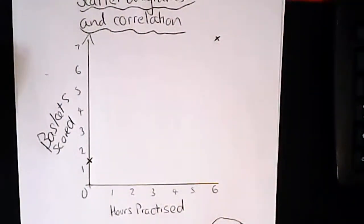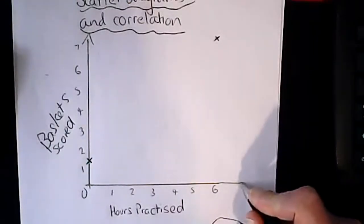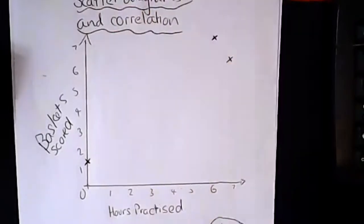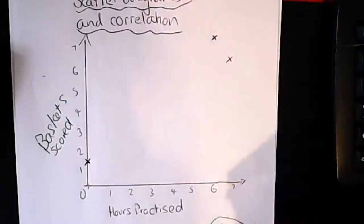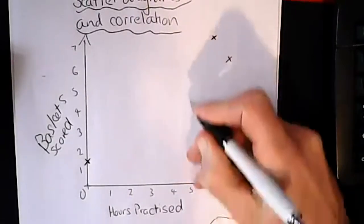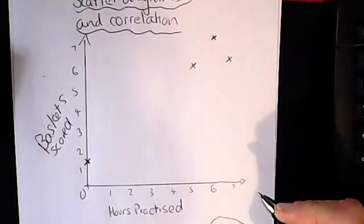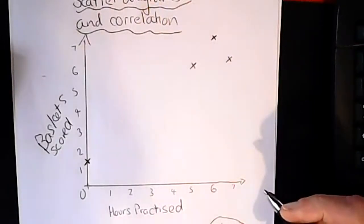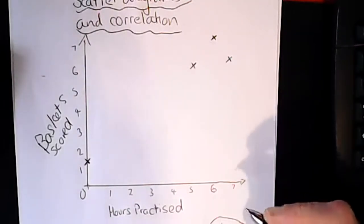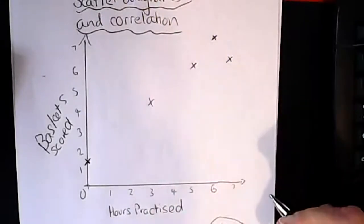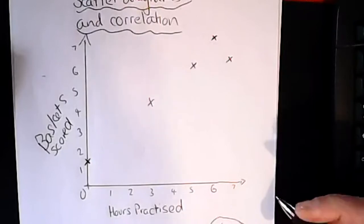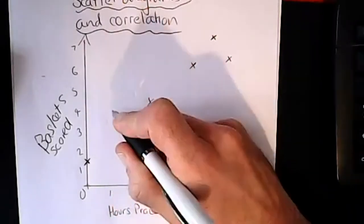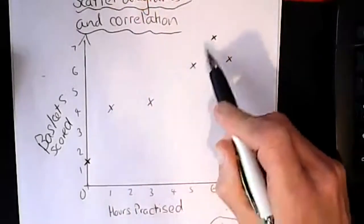Another player practiced seven hours altogether and didn't do quite as well as the six-hour guy but still got six baskets. Somebody else doing about five hours practice got six baskets. Another player - let's be fair, she practiced three solid hours and did pretty well, getting four baskets. Bob Regas is really keen on basketball but only practiced one hour and still got away with it, scoring four baskets.